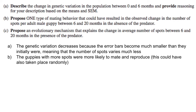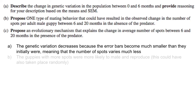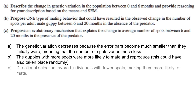Part C: Propose an evolutionary mechanism that explains the change in average number of spots between six and twenty months in the presence of the predator. In the presence of the predator, the average number of spots went down from 12 to around 9. We can say there was directional selection, in the face of the selective pressure of predators, that favored individuals with fewer spots. This made them more likely to survive, mate, and reproduce, bringing the average number of spots down considerably over the coming months.